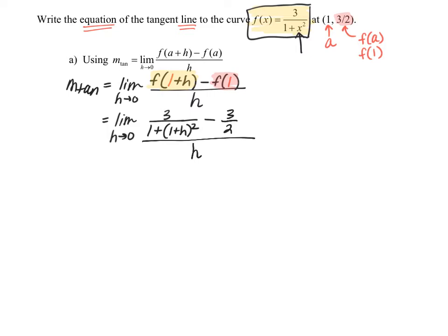This looks pretty complicated — this is called a complex fraction. We have to pause on the calculus and commit to doing a decent amount of algebra, because we ultimately want to do direct substitution, and we cannot do direct substitution with h in the denominator because we'd get division by zero. So we're going to need to get a common denominator and subtract these fractions in the numerator. The common denominator is between the quantity 1 plus (1+h)² and 2, so I'll multiply the first fraction by 2 over 2, and the second fraction by 1 plus (1+h)² over 1 plus (1+h)².